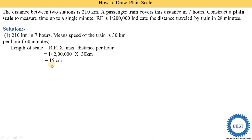To understand how 15 centimeters is obtained, we convert kilometers into centimeters. 1 kilometer equals 1000 meters, so we multiply 30 by 1000 to get 30,000 meters. This is further converted to centimeters: 1 meter equals 100 centimeters, so 30,000 is multiplied by 100. Then we divide by 2 lakh, giving us 15 centimeters.